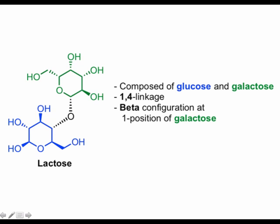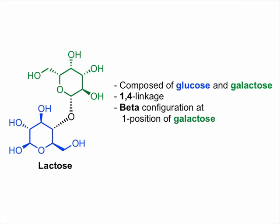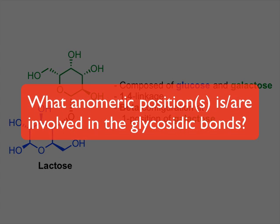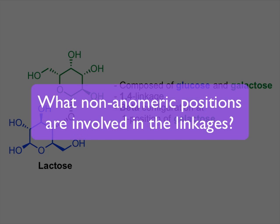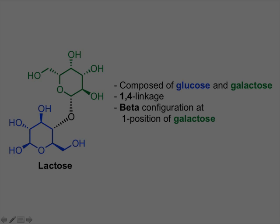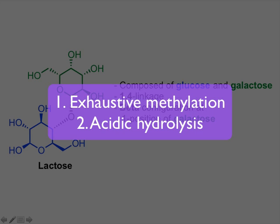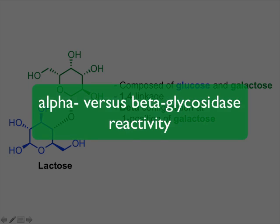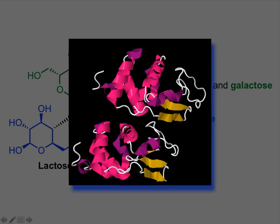The past two webcasts have introduced you to the process of structure elucidation of disaccharides. To review, there were three key questions to answer to fully solve the structure of lactose: which anomeric positions are involved in the glycosidic linkage, what non-anomeric hydroxyl groups are involved, and what's the configuration of the anomeric position involved in the glycosidic linkage? To address these questions, we used mild oxidation with aqueous bromine, exhaustive methylation followed by hydrolysis, and differential glycosidase reactivity, respectively. In the next webcast, we'll investigate the mechanisms of glycosidase enzymes.